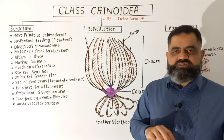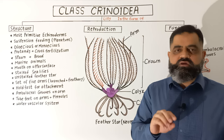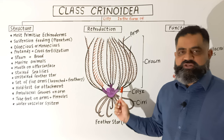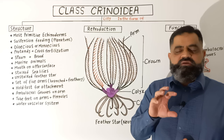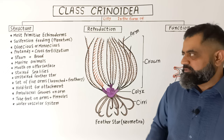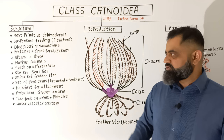Some species are stalked, like water lilies, with a long stalk rising from the theca. At the end of the stalk there are holdfast-like structures used to attach to the substratum. Other species are unstalked, like the feather star shown in this diagram, which instead has cirri that help with locomotion and attachment. These unstalked animals have five sets of arms arising from the theca, which are again branched into several branches.